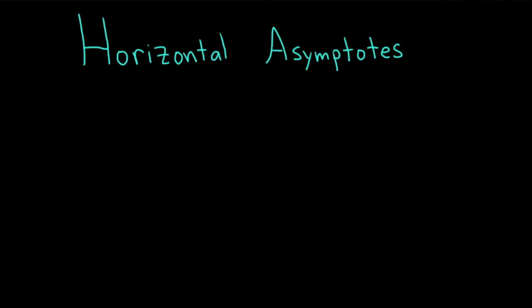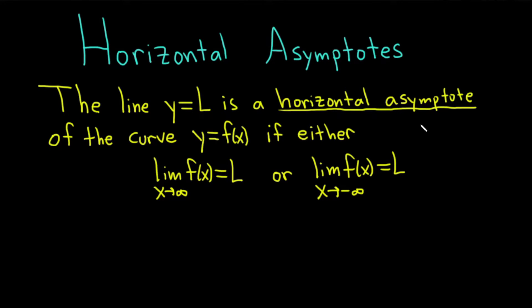Hi everyone, it's the Mathsorcer here with Chegg. In this video, we're going to be discussing horizontal asymptotes. Here we have the definition: the line y equals l is a horizontal asymptote of the curve y equals f of x if either the limit of f of x as x approaches infinity equals l, or the limit of f of x as x approaches negative infinity equals l. We'll do several examples of finding limits and identify the horizontal asymptotes that come about from these examples.